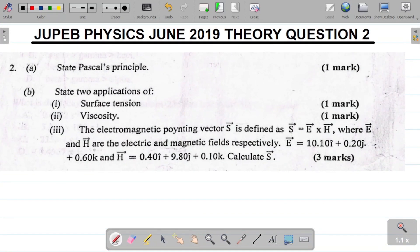The next question says the electromagnetic pointing vector S is defined as S equal to E cross H where E and H are the electric and magnetic fields respectively. They give us the value of E as the coordinates of E as 10.10i plus 0.20j plus 0.60k and H being equal to 0.40i plus 9.80j plus 0.10k. Find or calculate S.